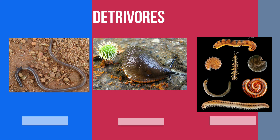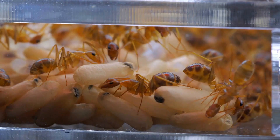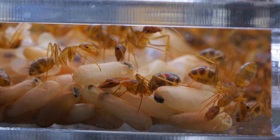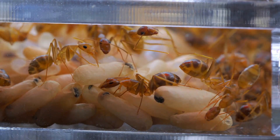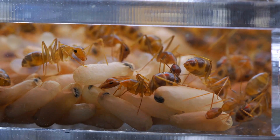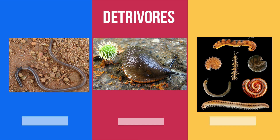And then detritivores — they're similar to scavengers because they feed on detritus found in the soil in your yard. Some examples of detritivores are insects like ants, and what they do is digest really small portions of organic material. Other examples are earthworms, slugs, and millipedes.